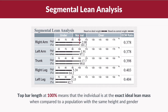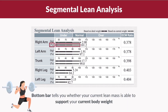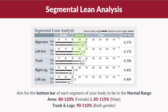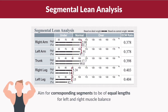Meanwhile, the bottom bar tells you whether your current lean mass is able to support your current body weight, where 100 is sufficient. It is advisable to aim for the bottom bar of each segment of your body to be in the normal range. Besides that, aim for corresponding segments to be of equal lengths for left and right muscle balance.